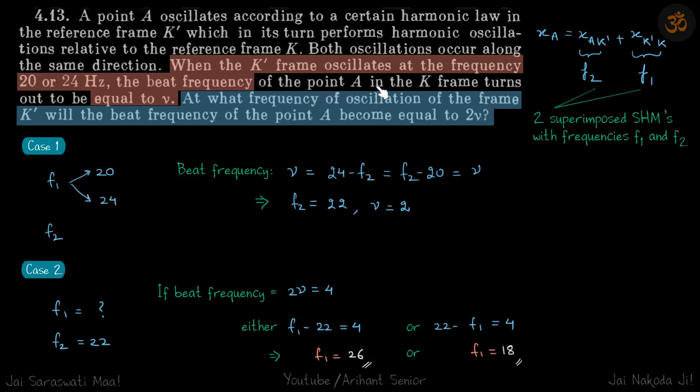The beat frequency of point A in the K frame turns out to be equal to ν. This is A with respect to K' plus K' with respect to K, which is the whole thing A with respect to K. This has a beat frequency of ν. At what frequency of the frame K' will the beat frequency of point A become equal to 2ν?